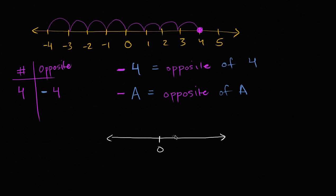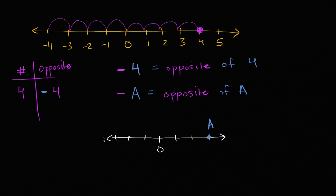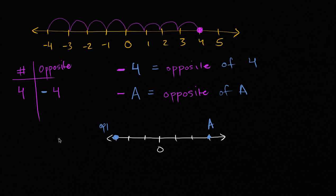So here's a number line with some tick marks. Let's say that a is some number positioned right over here. Negative a is going to be the opposite of a. So if a is three tick marks to the right, negative a is going to be three tick marks to the left — one, two, three. The opposite of a is that value right over there, and as a shorthand we write negative a.